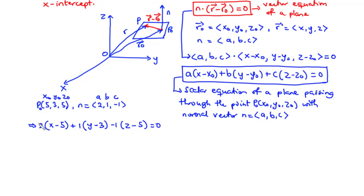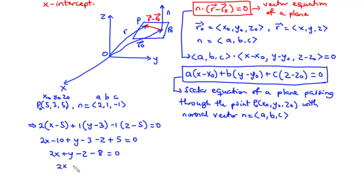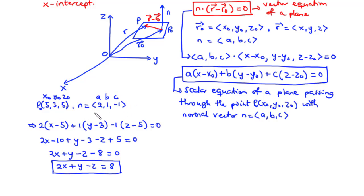Let's multiply across. We multiply 2 across: that becomes 2x minus 10. Plus — multiplying 1 across — we have y minus 3. We multiply negative 1 across: we have negative z plus 5, equals 0. Next, we have 2x plus y minus z, and then negative 10 minus 3 is negative 13, plus 5 gives negative 8, equals 0. We can represent this as 2x plus y minus z plus 8 — transposing negative 8 to the right-hand side. This is called the Cartesian vector equation of a plane in the normal form, and this is basically a linear equation in terms of x, y, and z.